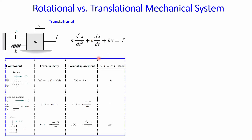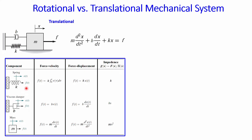For each element — the spring, damper, and mass — you can relate velocity and force, and also displacement and force, using specific formulas. Converting to the frequency domain using the Laplace parameter, we get k, b times s, or m times s squared for these three elements in the equation.